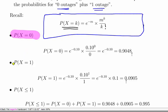We calculate this for both X equals 0 and X equals 1. For X equals 0: 0.10 to the power of 0 over 0 factorial. Remember that 0 factorial equals 1 and anything to the power of 0 equals 1. So we end up with e to the minus 0.10, which equals 0.9048.